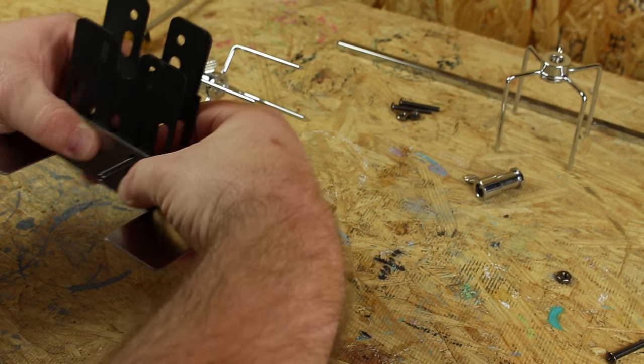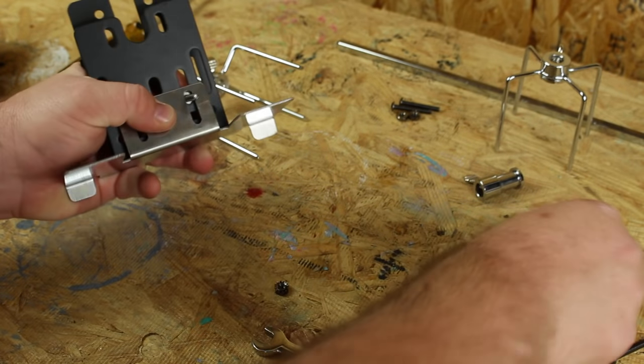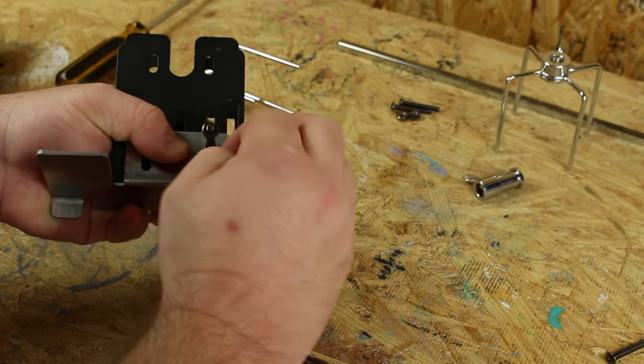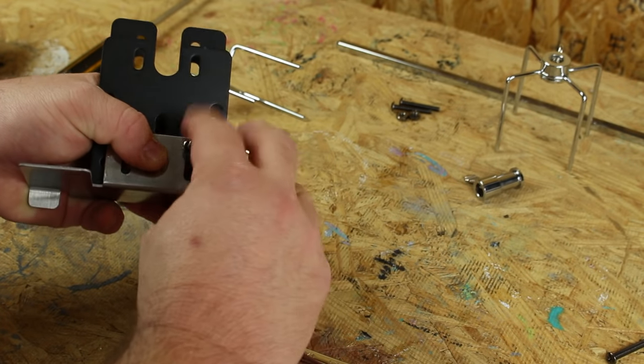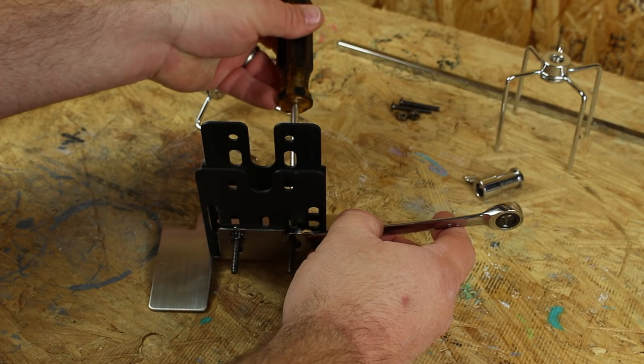Next up, we bolted the mount to the base going from the back to the front and we finger-tightened the nuts onto the bolts. Once you get both of them on, we use the wrench and the screwdriver to tighten them up and secure the mount to the base.